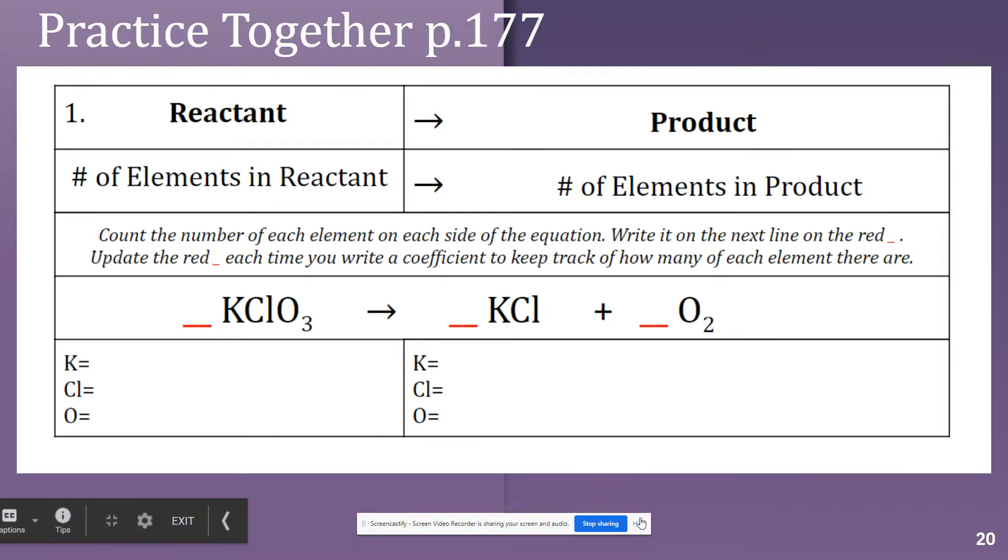We are going to balance this chemical equation, which is on slide 20 and in your documents. We've got potassium, chlorine, and oxygen, and it's going to result or yield potassium, chlorine, and some oxygen. So we're going to add some coefficients here and follow the steps we need to solve this.